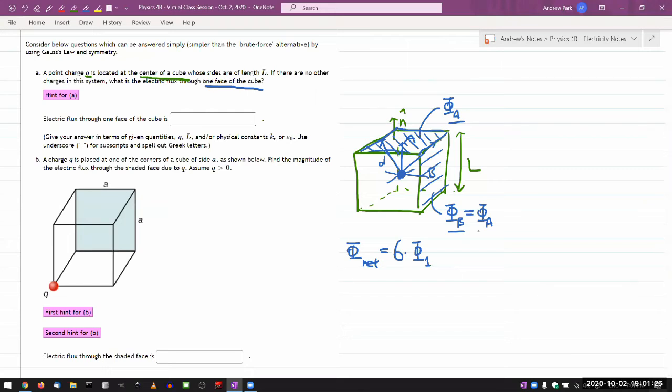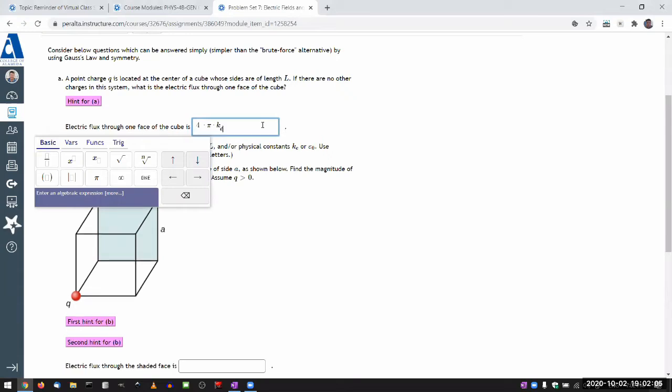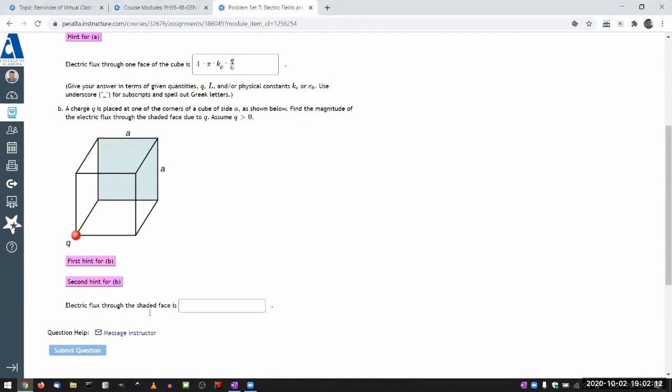So, once you have that relationship, then the rest of the question is easy. You have expression for the net flux that's given by Gauss's law, which says 4π Coulomb constant times the amount of charge enclosed. In this case, it's just Q. That's equal to six times the flux through one of the surfaces. So, flux through one of the surfaces is 4π Coulomb constant Q divided by six. That's the answer. Let me plug that in to verify. 4π times Coulomb constant times Q over six. Good.